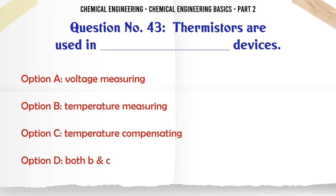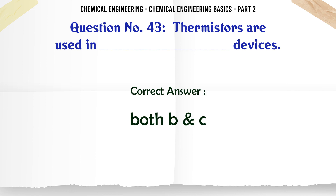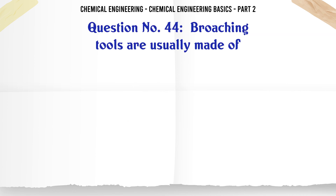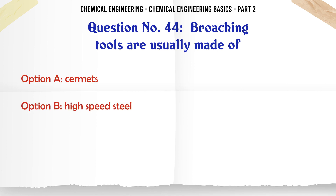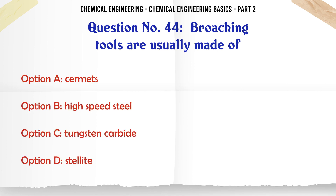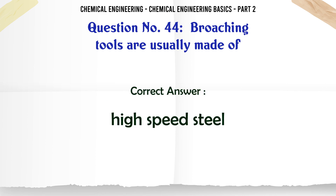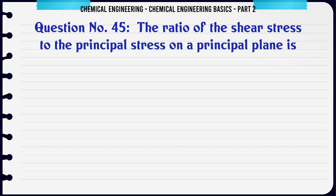Thermistors are used in which devices? a) voltage measuring, b) temperature measuring, c) temperature compensating, d) both b and c. The correct answer is: both b and c. Broaching tools are usually made of: a) cermets, b) high speed steel, c) tungsten carbide, d) steel. The correct answer is: high speed steel.